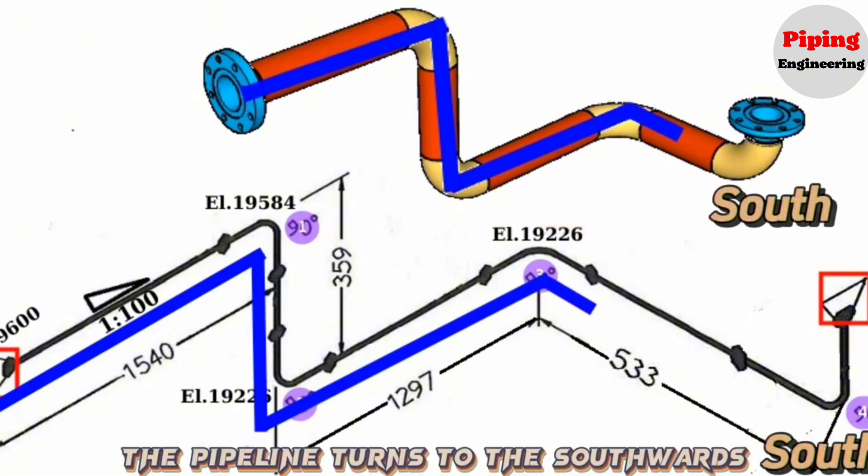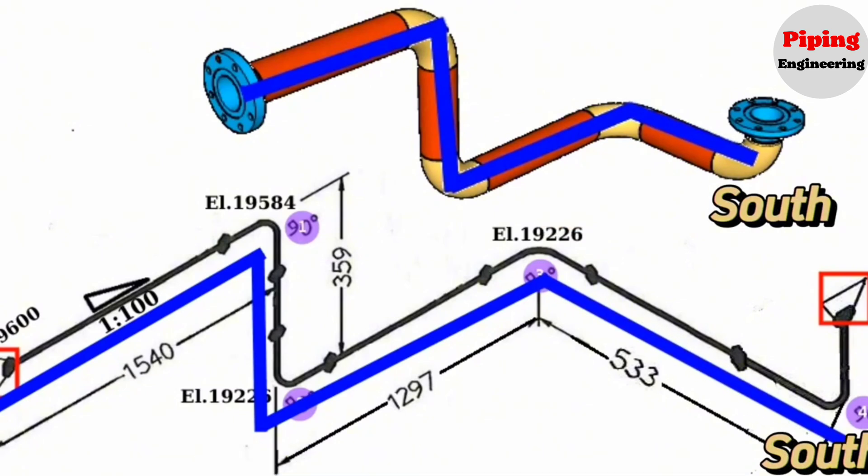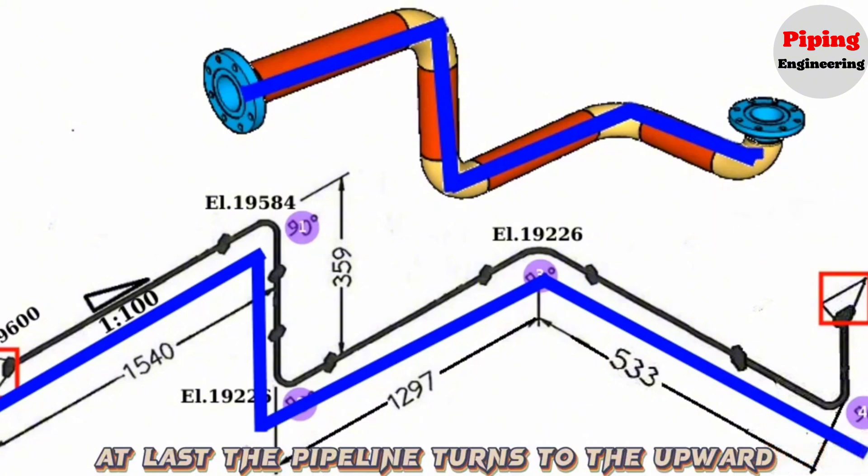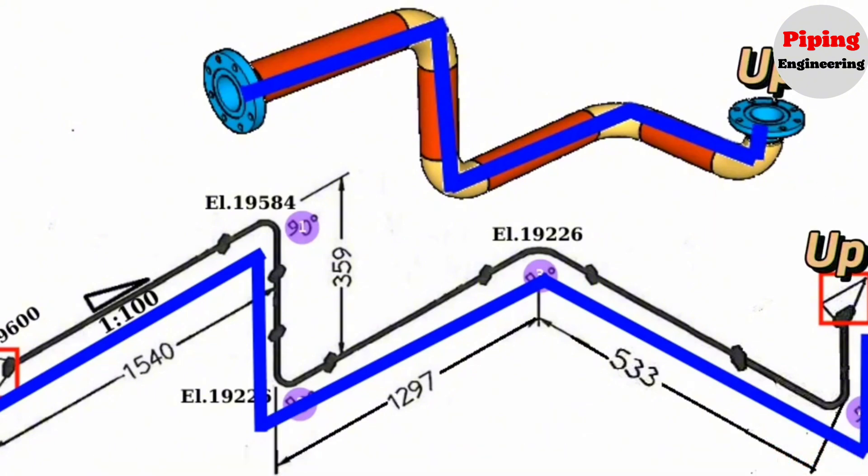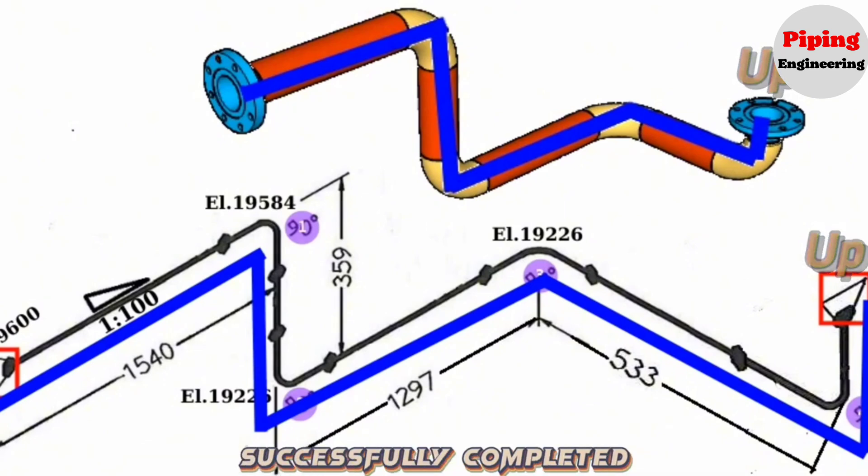At this point, the pipeline turns to the southwards for a length of 533 millimeters. At last, the pipeline turns upward. Reading the piping isometric drawing is successfully completed.